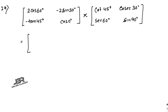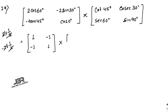For the second matrix: cot45° equals 1, sec60° equals 2 (since cos60° equals 1/2), cosec30° equals 2 (since sin30° equals 1/2), and sin90° equals 1. So the first matrix becomes [1,-1; -1,1] and the second becomes [1,2; 2,1]. Multiplying these 2×2 matrices gives the final answer.